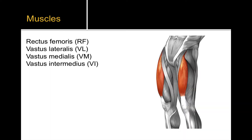The quadriceps muscle group consists of, as the name tells you, four separate distinct muscles. Quad for four, seps for heads or distinct muscles. They collectively make up the quadriceps muscle group: rectus femoris, vastus lateralis, vastus medialis, and vastus intermedius. I have abbreviations for the muscles that I'll use for the labels following the names.